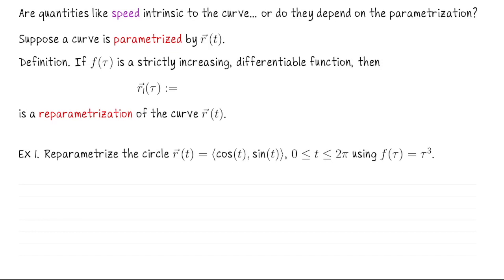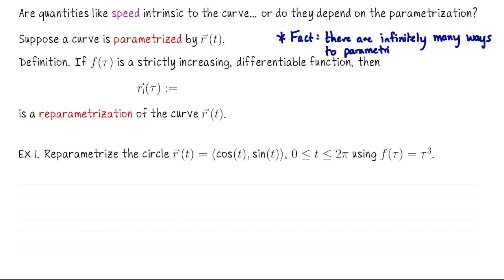Now let's look at a new parametrization to see how these quantities might change. The key question is: are quantities like speed intrinsic to the curve — based only on its shape regardless of parametrization — or do they depend on the parametrization? Do two parametrizations of the same curve give the same speed? Given any curve parametrized by r of t, there are infinitely many ways to parametrize it. Changing the parametrization is called reparametrizing the curve.